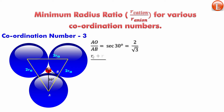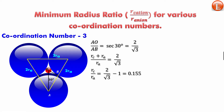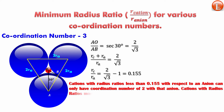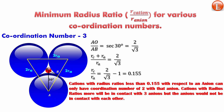AO upon AB — hypotenuse upon adjacent — equals 1/cos30, which is sec30 = 2/√3. Since AO = rᶜ + rₐ and AB = rₐ, we get (rᶜ + rₐ)/rₐ = 2/√3, which simplifies to rᶜ/rₐ = 2/√3 − 1 = 0.155. So the minimum radius ratio for coordination number three is 0.155. Cations with a radius ratio less than 0.155 can only have coordination number two; those with a higher ratio can be in contact with three anions.